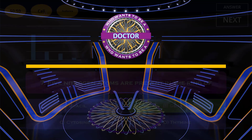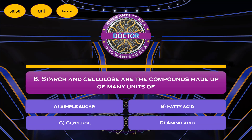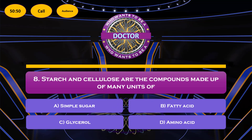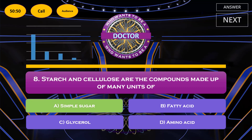Question number 8: starch and cellulose are compounds made up of many units of — option A: simple sugar; option B: fatty acids; option C: glycerol; option D: amino acids. Simple sugars, that is monosaccharides, are the simplest carbohydrates and the building units of complex carbohydrates like starch and cellulose. So the correct answer is option A, simple sugar.